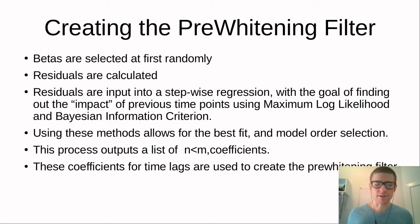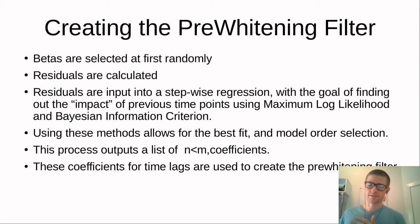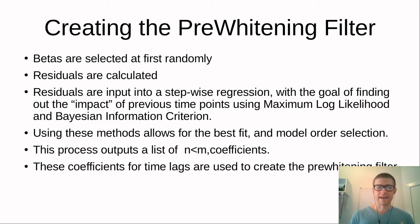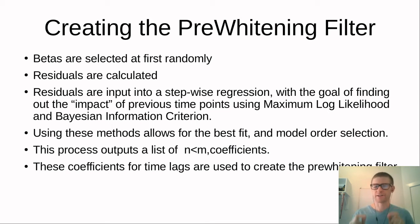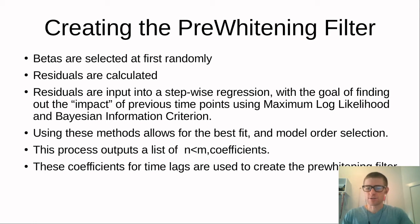During the ARIRLS function, a pre-whitening filter is applied. This filter takes colored noise — noise with some frequency or pattern — and adjusts it to become random. This is done by applying beta values to prior time points: a beta at time point nine, eight, seven, etc. Initially these betas are selected randomly and are hard-coded in the toolbox. The residuals from the data to the model are then calculated, and stepwise regression is used to determine the impact of each time point.